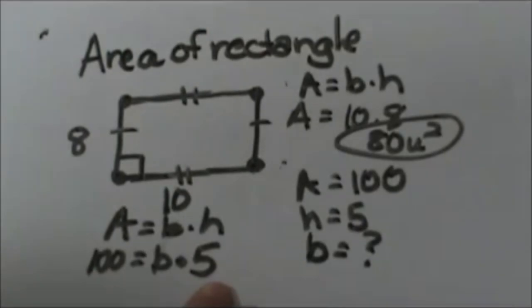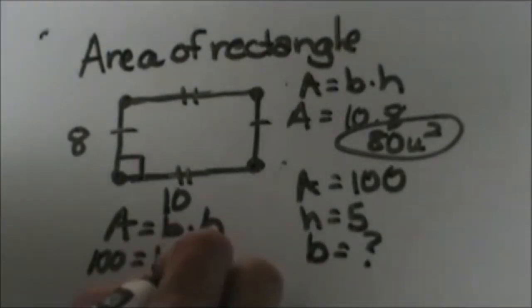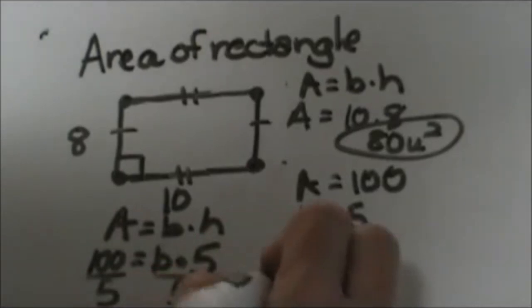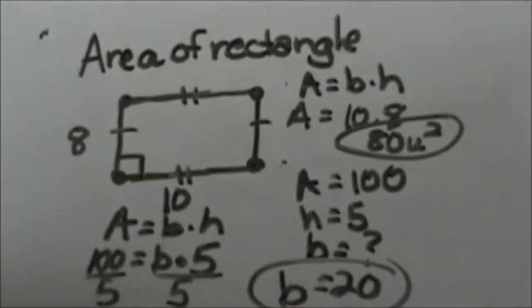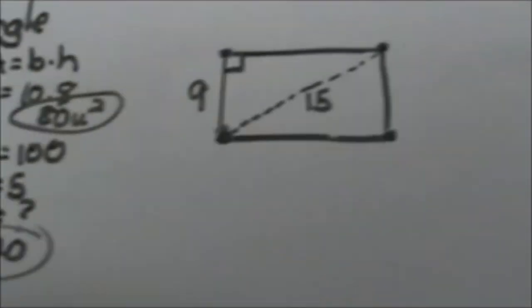Now to solve for this we just divide both sides by 5 and we get b is 20. So the base would be 20 units long. So there's our first example of a forward and a backward problem.